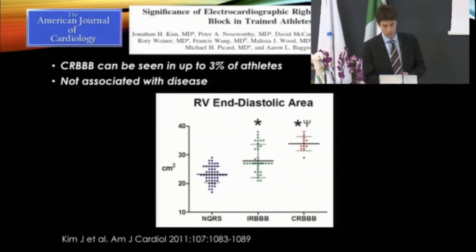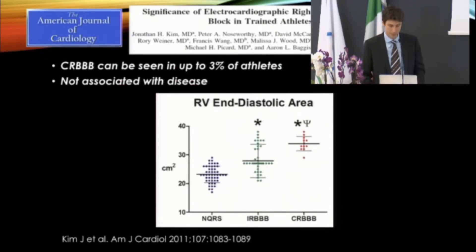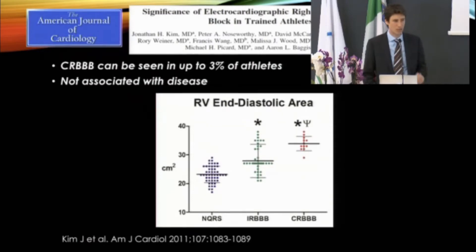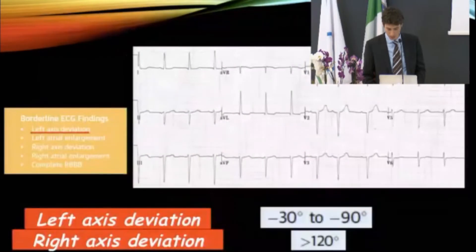The development of right bundle branch block in athletes could simply be related to cardiac adaptation — athletes have dilatation of all four chambers including the right ventricle, and right bundle branch block may relate to that. However, if we see complete right bundle branch block in a sedentary young individual, we tend to do an echocardiogram. So there is a difference in interpretation between athletes and non-athletes: in an elite athlete, complete RBBB is considered cardiac adaptation, but in a non-athlete we tend to investigate.